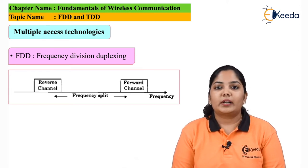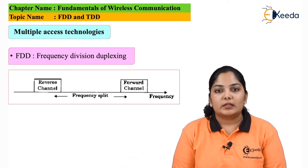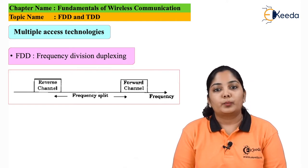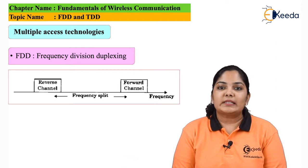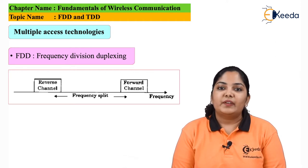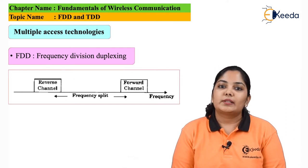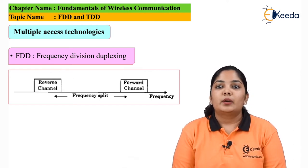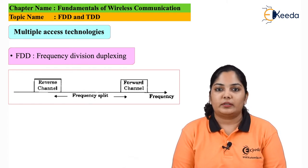The disadvantage of using frequency division duplexing is that we require costly duplexer circuits, which increase the cost of the system. Our mobile phones also become costly, and in frequency division duplexing, every channel that is provided to the user but not used is wasted. Hence, we require some other methods by which we can improve the spectrum efficiency.